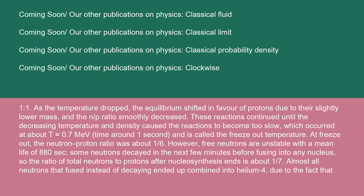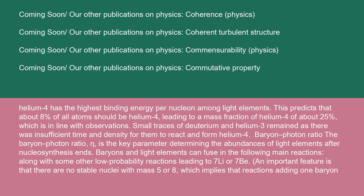However, free neutrons are unstable with a mean life of 880 seconds. Some neutrons decayed in the next few minutes before fusing into any nucleus, so the ratio of total neutrons to protons after nucleosynthesis ends is about one-seventh. Almost all neutrons that fused instead of decaying ended up combined into helium-4 due to the fact that helium-4 has the highest binding energy per nucleon among light elements. This predicts that about 8% of all atoms should be helium-4, leading to a mass fraction of helium-4 of about 25%, which is in line with observations. Small traces of deuterium and helium-3 remained as there was insufficient time and density for them to react and form helium-4.